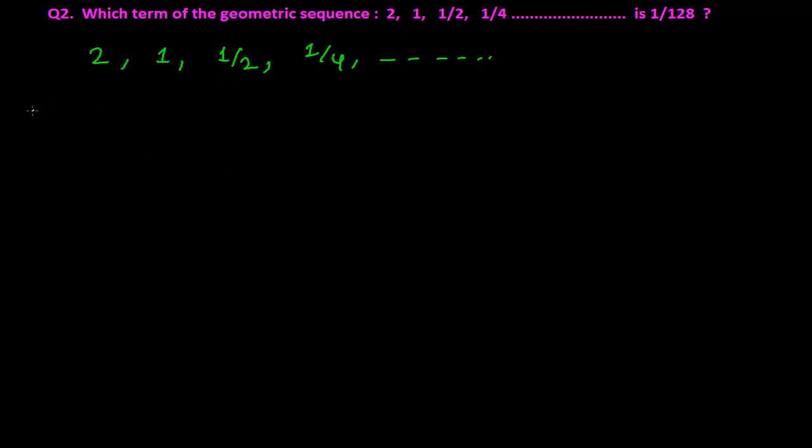From here I can now easily write that our first term is 2, and our common ratio is the succeeding term over the preceding term. So I am taking a₂ by a₁, and our succeeding term that's 1 and our preceding term a₁ that's 2, so 1/2 or simply half is our common ratio.